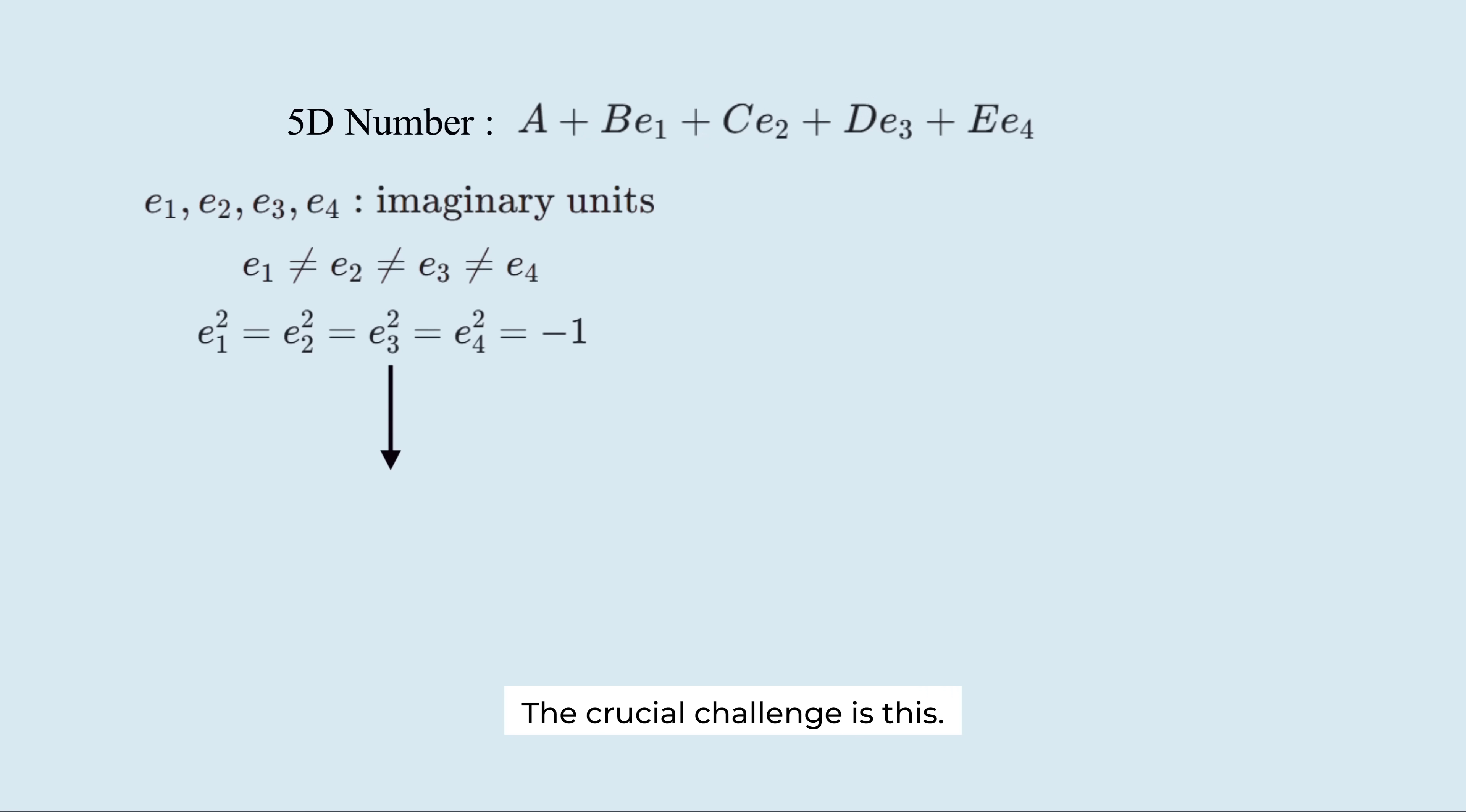The crucial challenge is this. The multiplication operations between two different imaginary units. You must define these operations in order to define multiplication at all. Let's try the most natural approach. E1 times E2 equals E3. E2 times E3 equals E4. E3 times E4 equals E1. So far, so good.